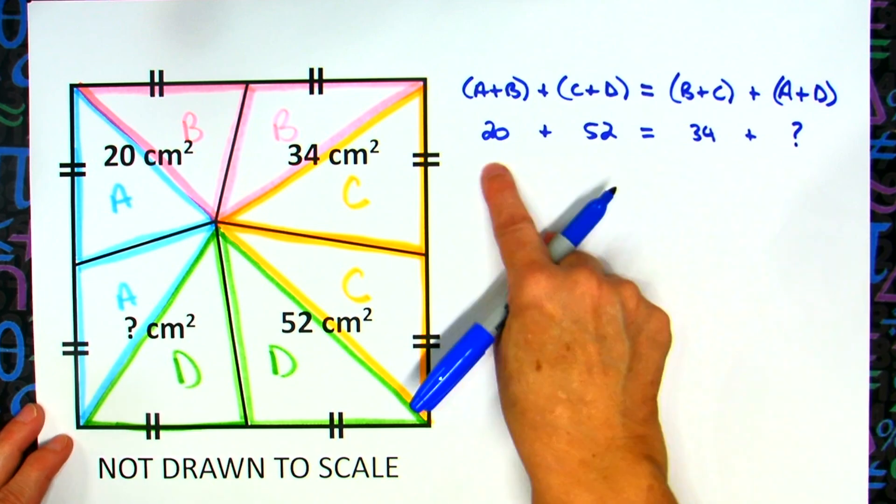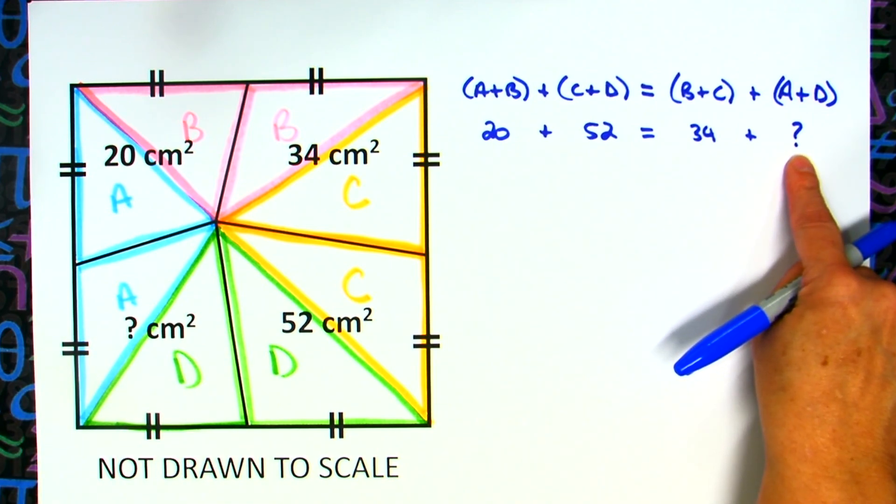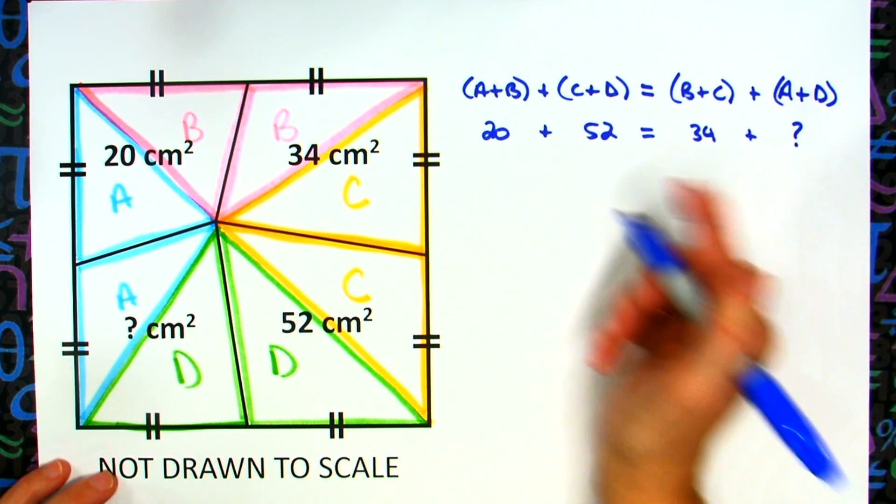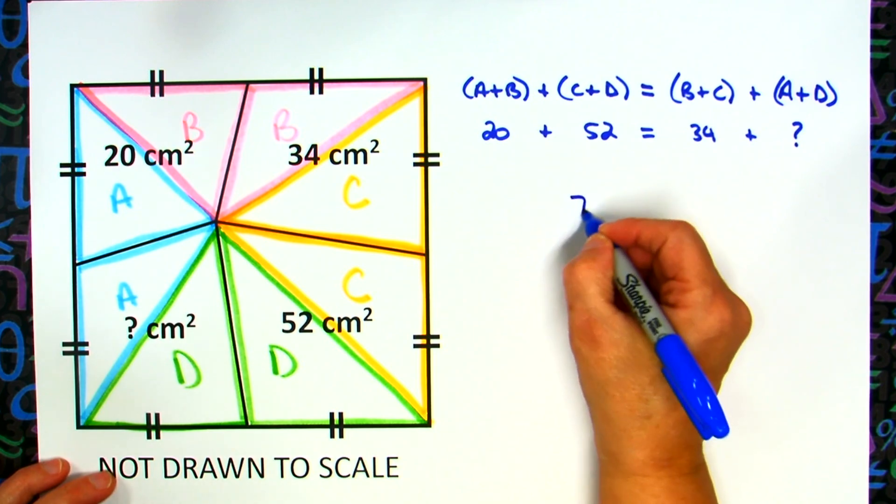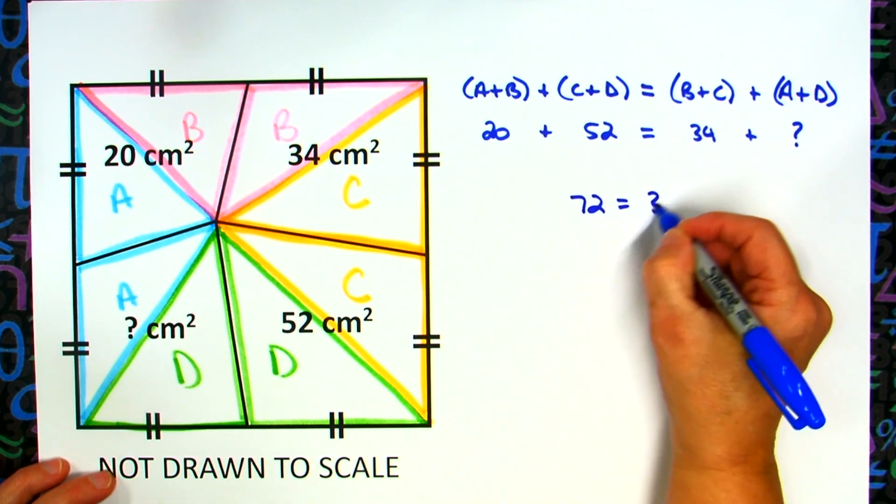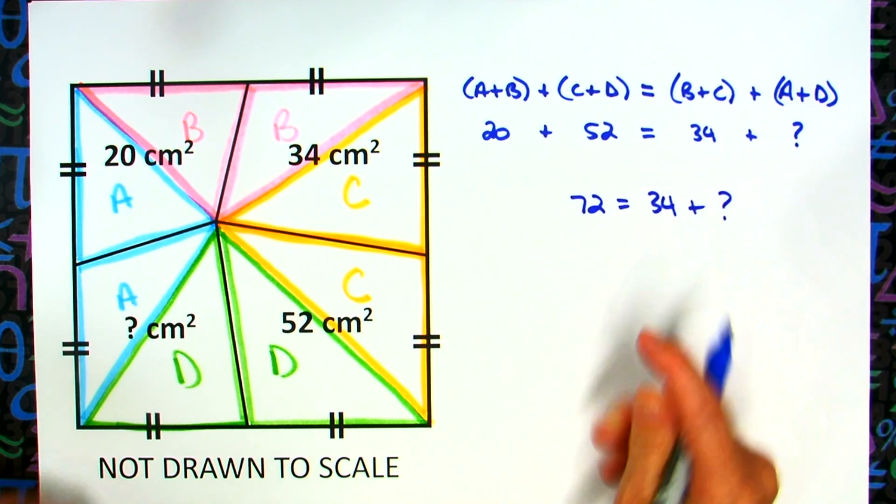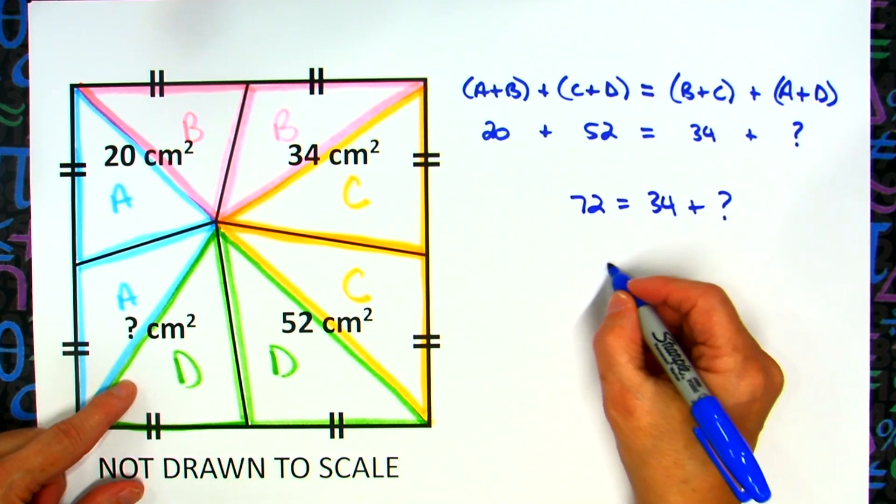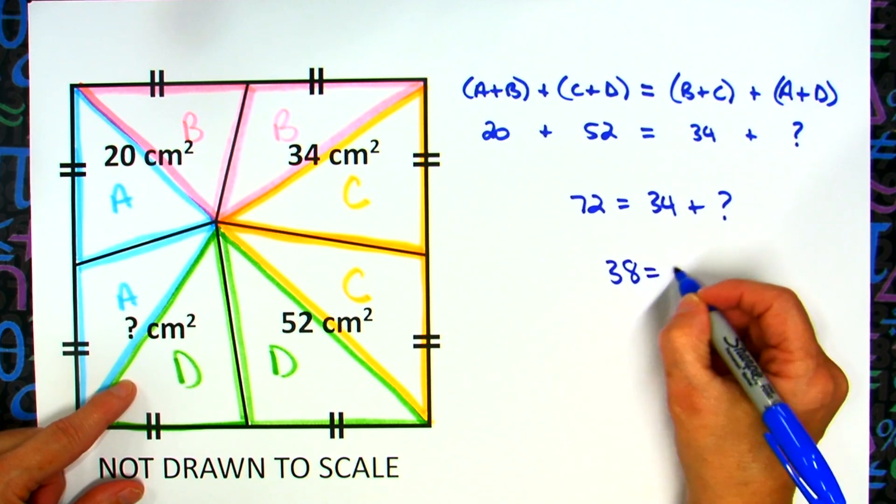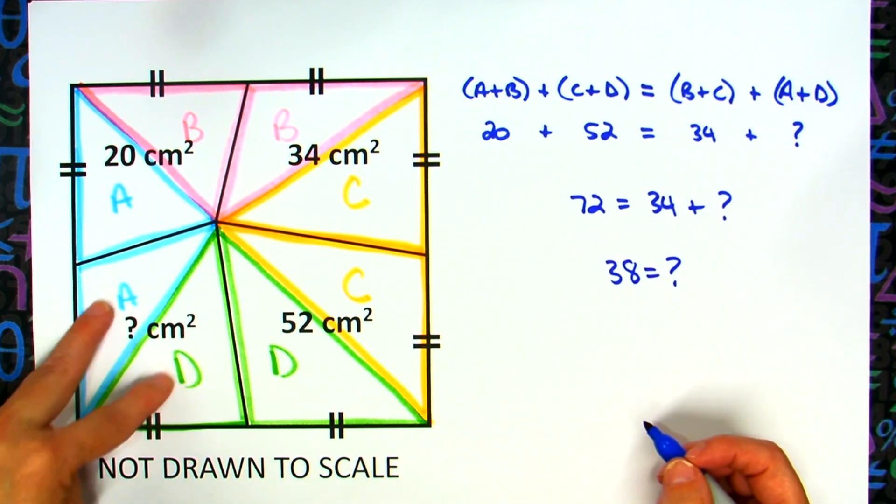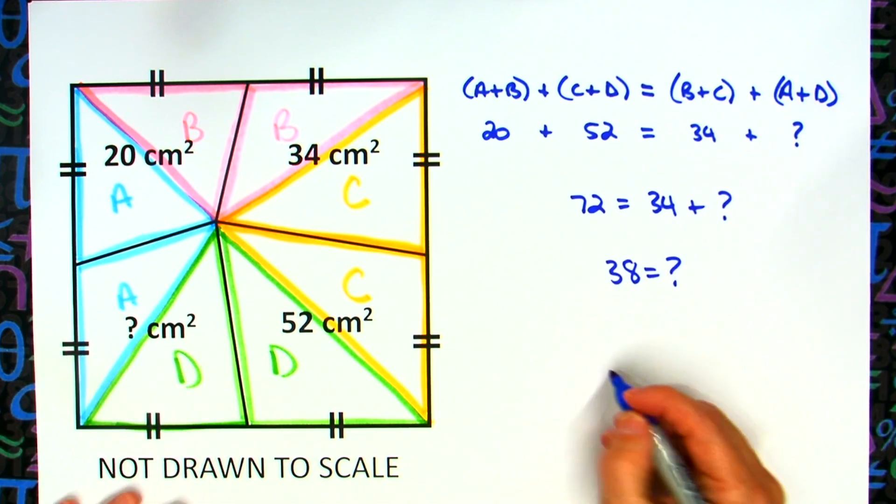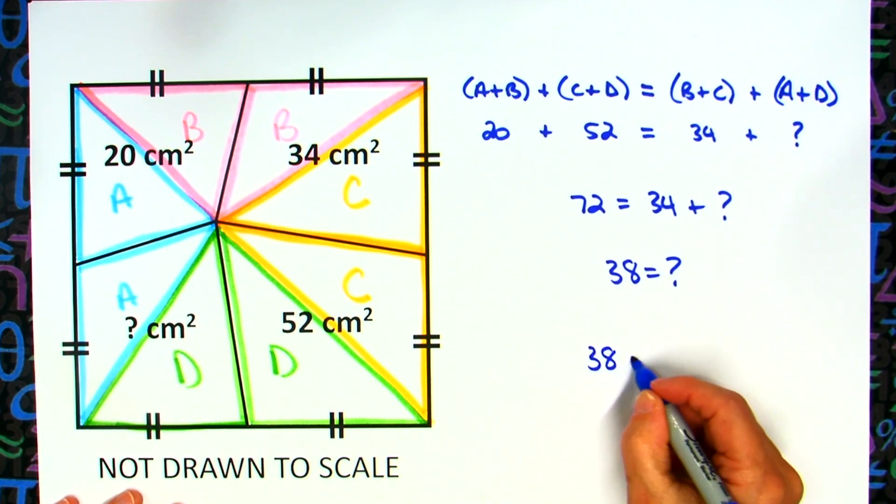But now I basically have an equation with one unknown, so I can solve this equation, and I could put a variable there if I want. I don't have to. I can just leave the question mark there. Going ahead and adding on that left-hand side, I'm going to have 72 is equal to 34 plus my question mark, the question mark being this area here. Subtracting 34 from both sides of the equation, I get 38 for the question mark. So the area right here, the area of A plus D is 38, so that'd be 38 square centimeters.